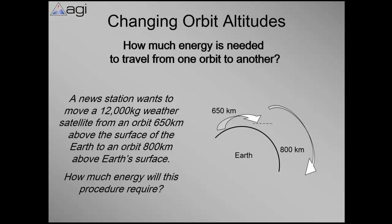So how would we apply this concept? Let's take a look at how much energy we're going to need to go from one orbit to another. And this has real world applications because we need to know how big our rocket's going to be, how much thrust we're going to need, what kind of fuel we're going to need, all those things relate to energy. That's why energy is so important. So here it says a new station wants to move a 12,000 kilogram weather satellite from 650 kilometers to 800 kilometers. How much energy is required? So we need to take a look at the energy for each of those situations and then just look at the difference. And that's how much energy we need.